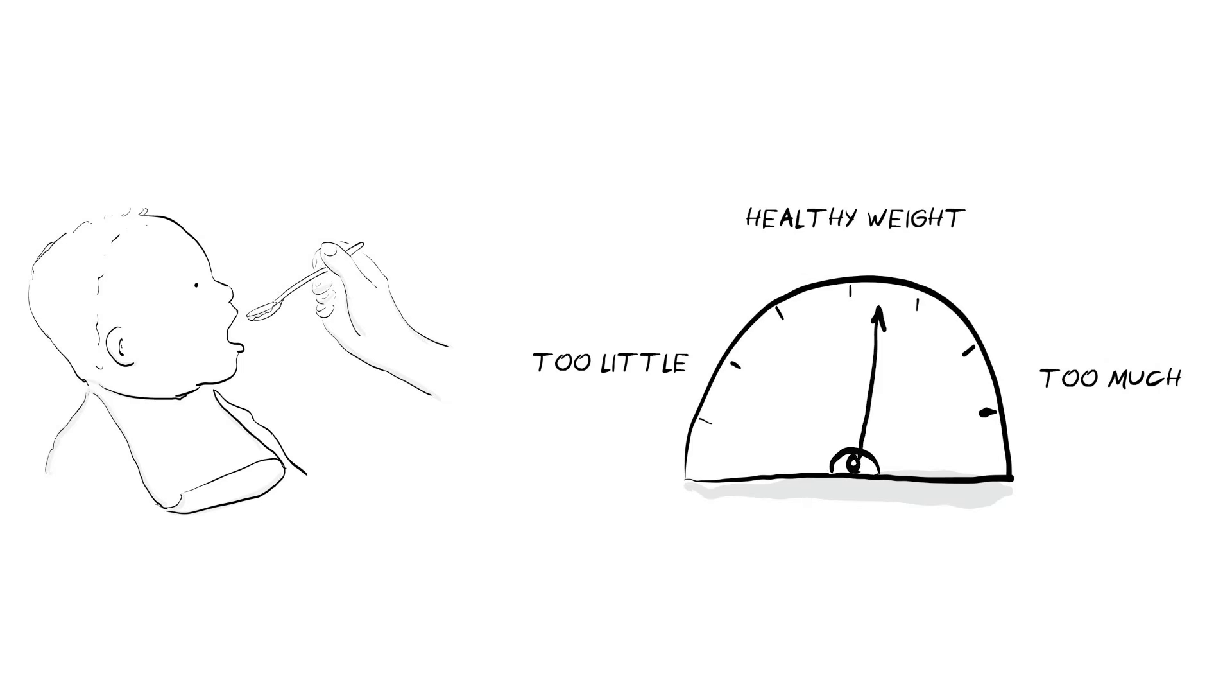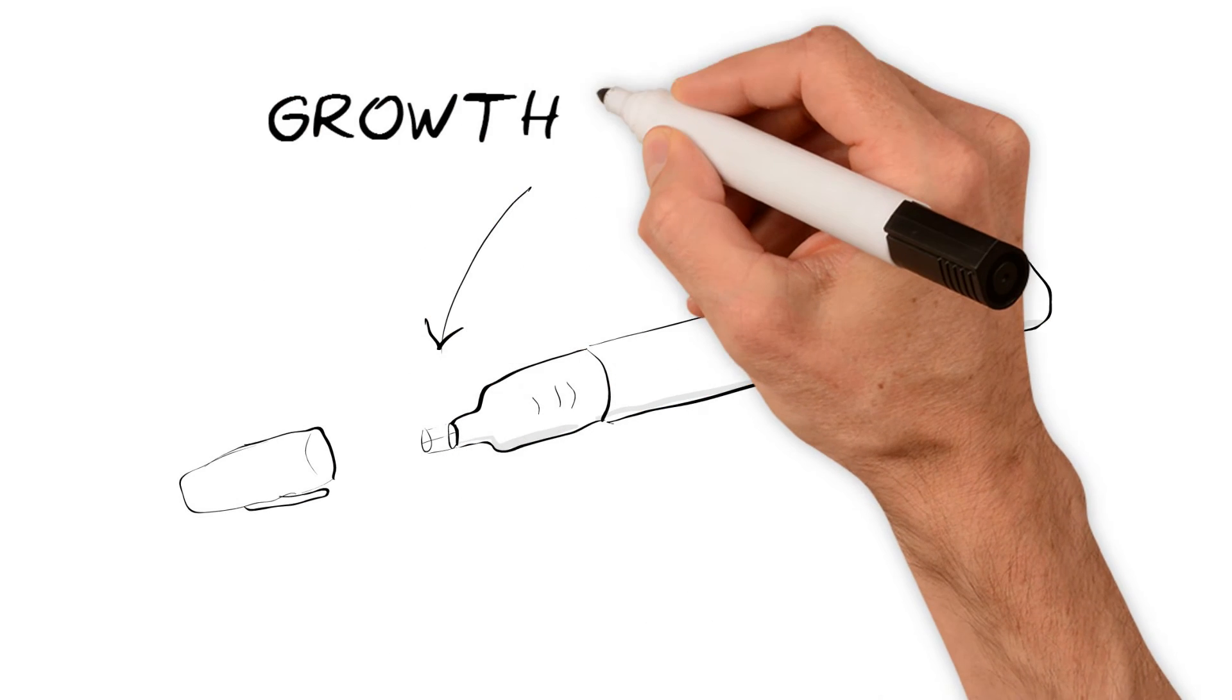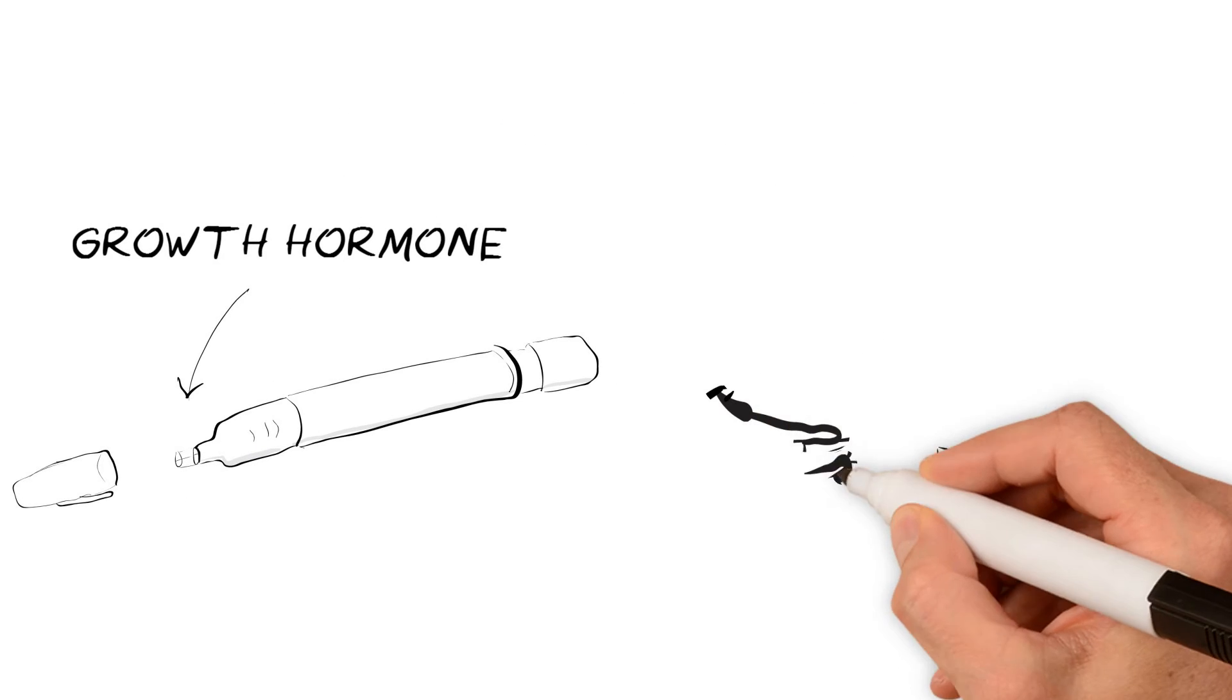After the first few years, and once dietary intake has been optimized, children with SRS may be offered growth hormone, which is given as a daily injection.